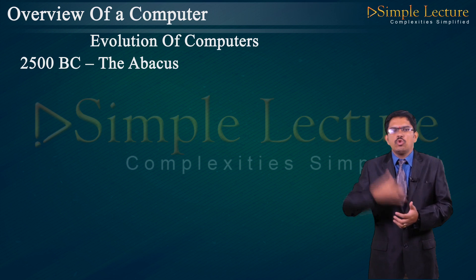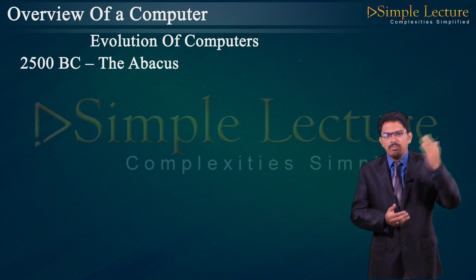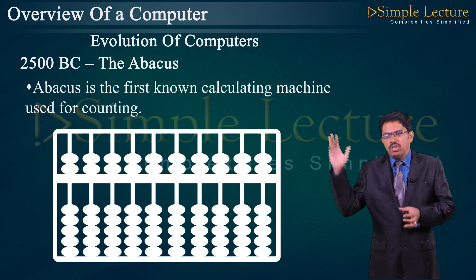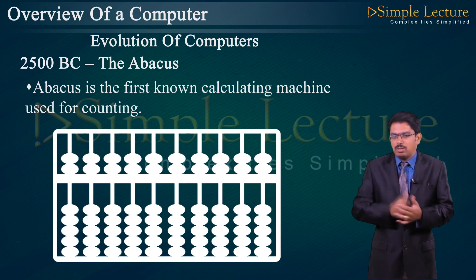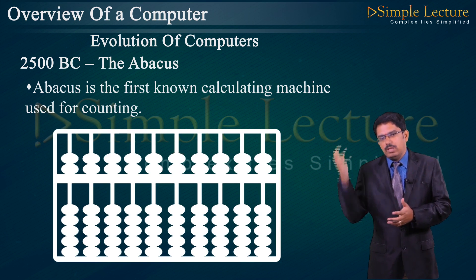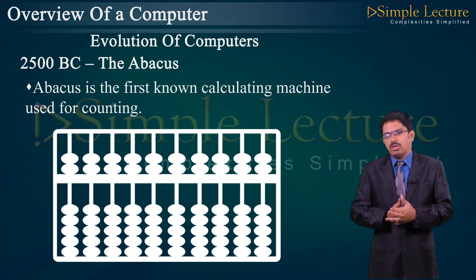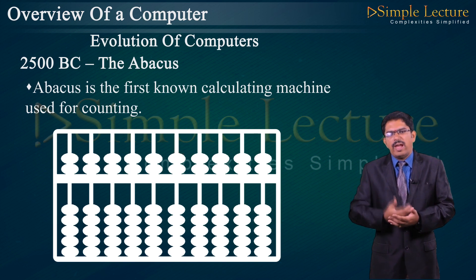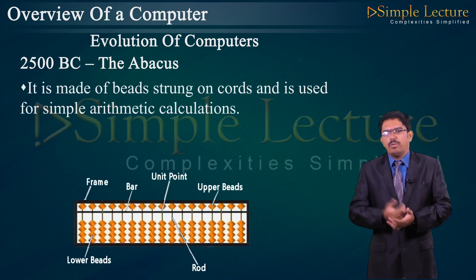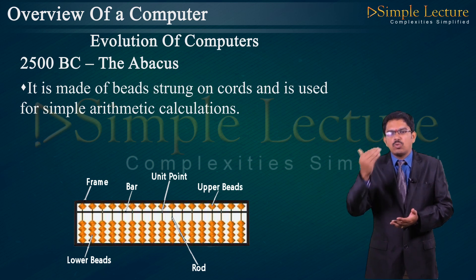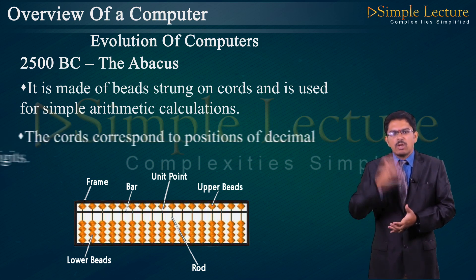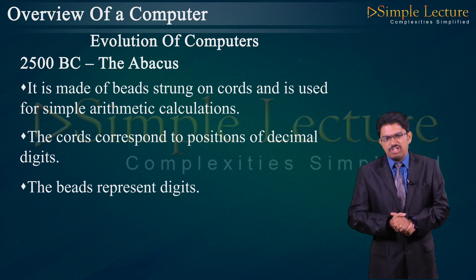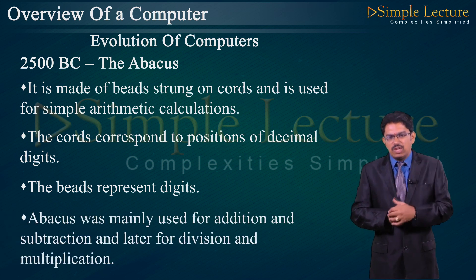History: before 2500 BC, the Abacus was introduced — it is the first known calculating machine used for counting digits. The Abacus machine uses beads strung on chords to denote digits. Based on the number of coins/beads, digits can be calculated, starting from 0 to 9. It is made up of beads strung on chords and is used for simple arithmetic calculations. The chords correspond to positions of a decimal digit, and the beads represent the digit. The Abacus was mainly used for addition and subtraction.